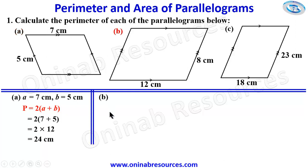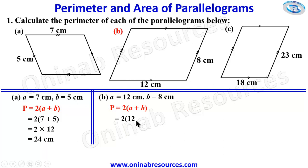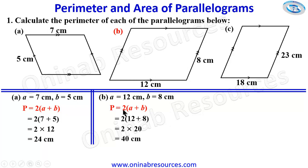For part B, we are given A = 12 cm and the other side as 8 cm. Substituting into the perimeter formula: 2(12 + 8). And 12 plus 8 is 20, so we have 2 times 20, which gives 40 cm as the perimeter of the parallelogram in part B.